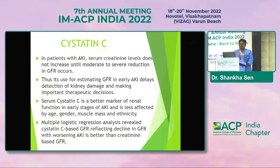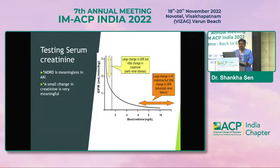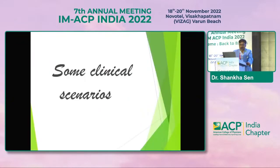In patients with AKI, serum creatinine does not increase until there is moderate to severe reduction in GFR, so its use for estimating GFR in early AKI delays detection of kidney damage. Serum cystatin C is a better marker in early stages, as it is less affected by age, gender, muscle mass, and ethnicity. Multiple logistic regression analysis reveals cystatin C-based GFR better reflects decline in GFR with early AKI than creatinine-based GFR. MDRD is meaningless in acute kidney injury — it is for chronic kidney disease. A small change in creatinine is also very meaningful when dealing with kidney disease.